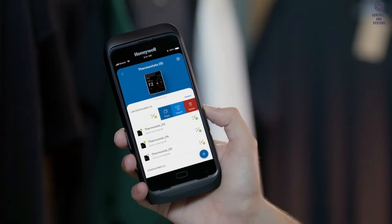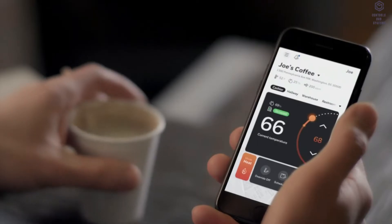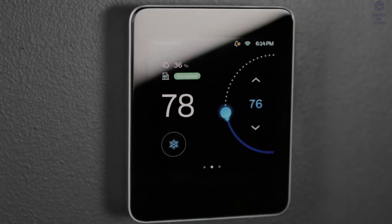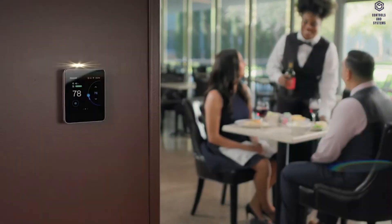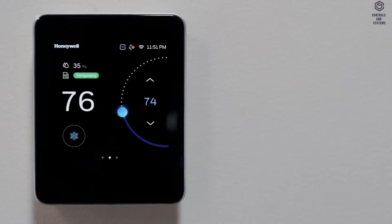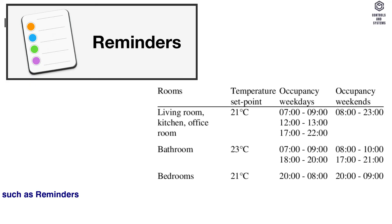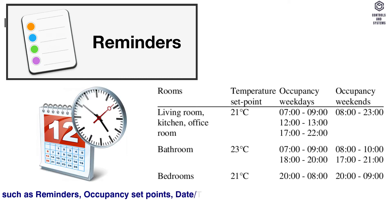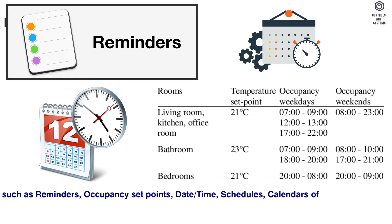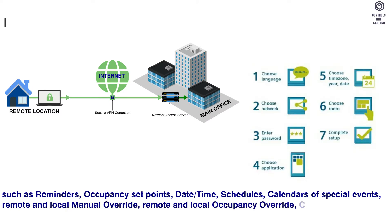The device can be easily commissioned through the Honeywell Connect mobile app. It features an easily customizable and intuitive UI. It supports BAConnect system schedule and holiday configuration. Multiple configurable levels of user privilege access are available for features such as reminders, occupancy set points, date, time, schedules, calendars of special events, remote and local manual override, and remote and local occupancy override.